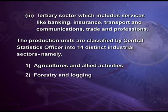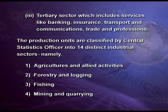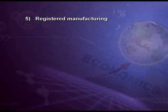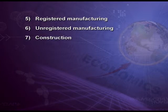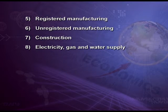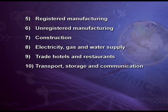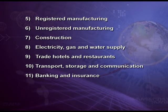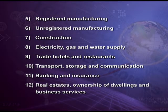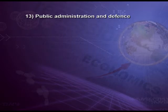The Central Statistics Officer has classified all industrial sectors into 14 different categories: first, agriculture and allied activities; second, forestry and logging; third, fishing; fourth, mining and quarrying; fifth, registered manufacturing; sixth, unregistered manufacturing; seventh, construction; eighth, electricity, gas and water supply; ninth, trade, hotels and restaurants; tenth, transport, storage and communication; eleventh, banking and insurance; twelfth, real estate, ownership of dwellings and business services; thirteenth, public administration and defense; and fourteenth, other services.